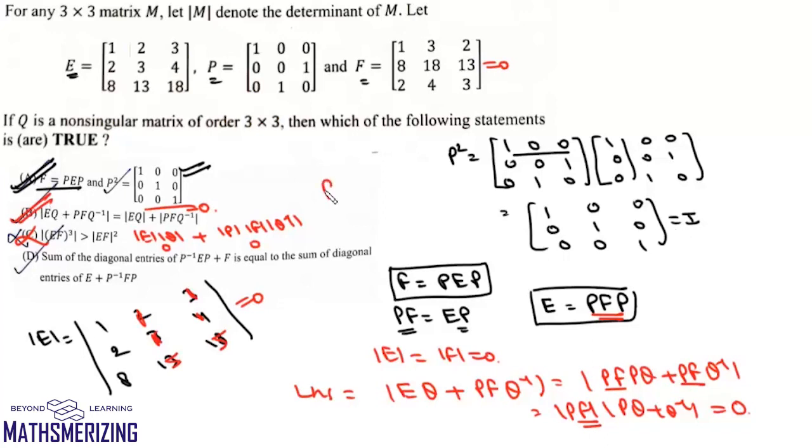Since P² equals I, that means P is self-inverse, so P⁻¹ = P. Therefore P⁻¹EP + F equals PEP + F, and since PEP is F, it will be 2F.